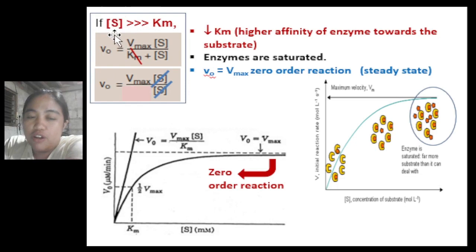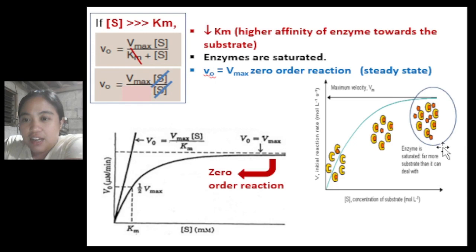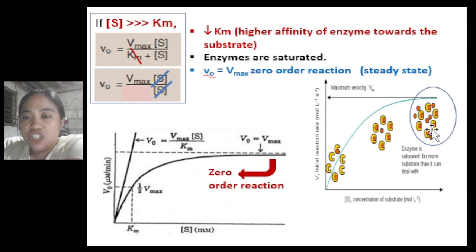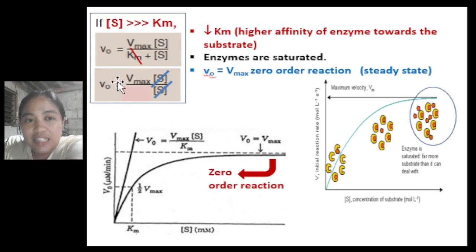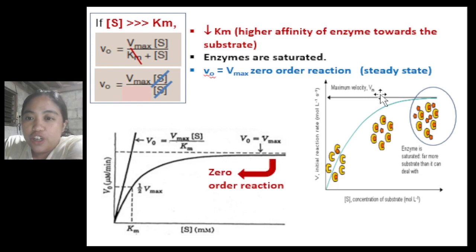When the substrate concentration is very large, Km becomes negligible and can be cancelled from the equation. Both the substrate concentration terms cancel out, leaving the initial velocity equal to the maximum velocity Vmax. At this point the enzyme is saturated — all active sites are occupied by substrate. This is the zero-order reaction, also called the steady state, which is demonstrated by the leveling off of the curve.